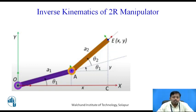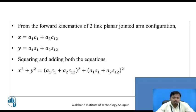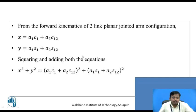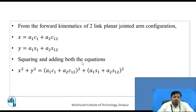From the forward kinematics of the two-link planar jointed arm configuration, we have: x = a1·cos(θ1) + a2·cos(θ1 + θ2), and y = a1·sin(θ1) + a2·sin(θ1 + θ2). If we square and add both these equations, we get x² + y² on the left-hand side, and (a1·c1 + a2·c12)² + (a1·s1 + a2·s12)² on the right-hand side.